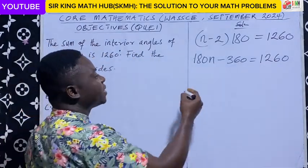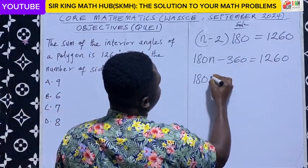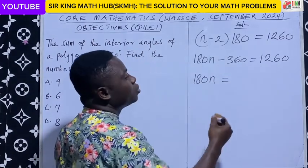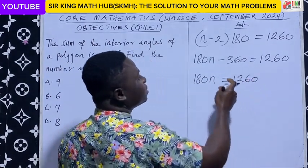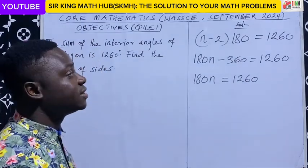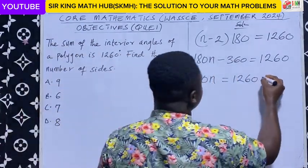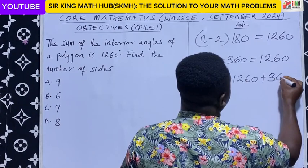So we can group like terms. It becomes 180n equals 1260. Then we transpose negative 360 to the right. It becomes positive 360.